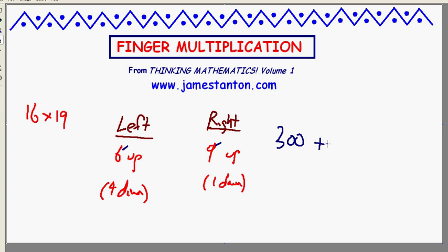And I add to that the product of the digits down. 4 down and 1 down. 4 times 1 is 4. I bet 16 times 19 is 304.